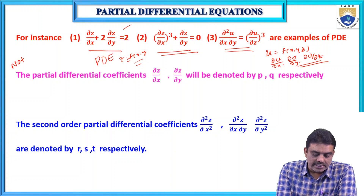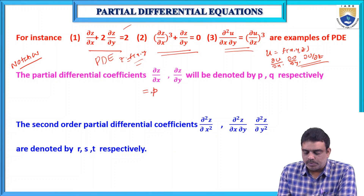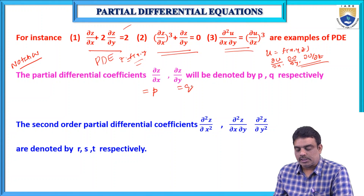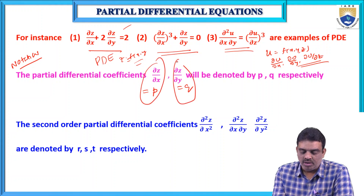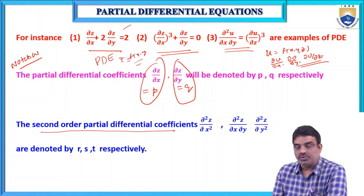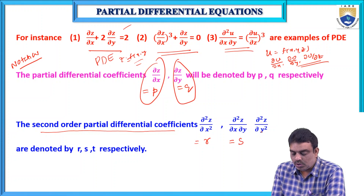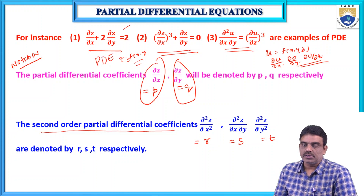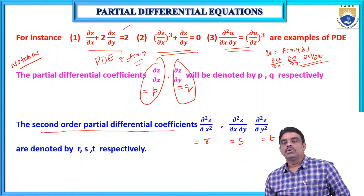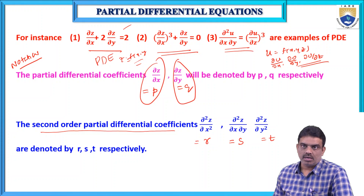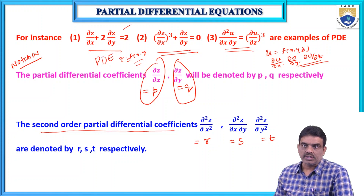The notation used in this chapter: ∂z/∂x is denoted by p, and ∂z/∂y is denoted by q. For second-order partial differential coefficients: ∂²z/∂x² is r, ∂²z/∂x∂y is s, and ∂²z/∂y² is t. Wherever ∂z/∂x appears it can be replaced by p, and ∂z/∂y by q. This notation will be followed throughout the chapter.